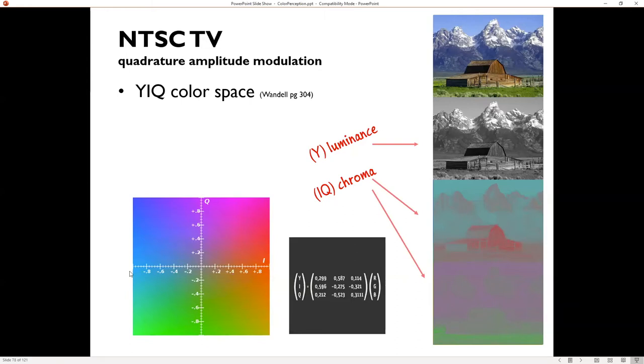So you might get tempted to call this the sort of like blue, red axis, and the green axis or something like this, but really they're just arbitrary axes in space. And it's a linear transform. So YIQ can be calculated as some matrix times RGB, and there's another matrix that will take you back.